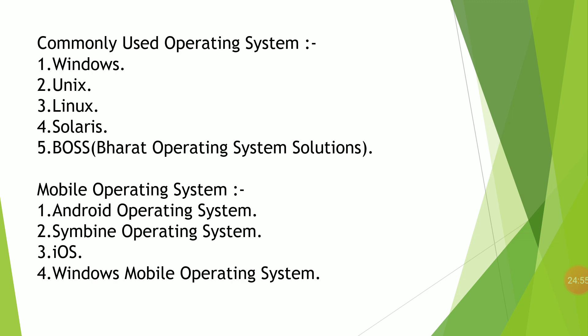Next, commonly used operating systems. The most commonly used operating system for computer systems right now is Windows. Windows is an operating system that acts as an interface between user and computer, and it is based on graphical user interface. It has been developed by Microsoft and was introduced on November 20, 1985.